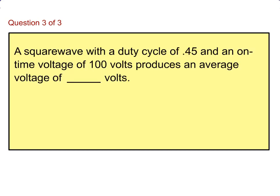A square wave with a duty cycle of 0.45 and an on-time voltage of 100 volts produces an average voltage of 45 volts.